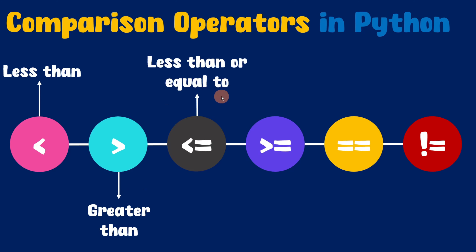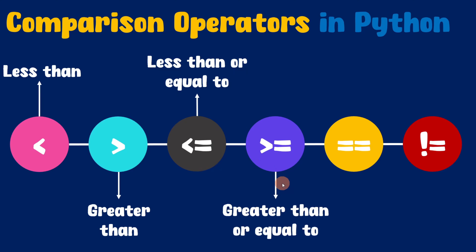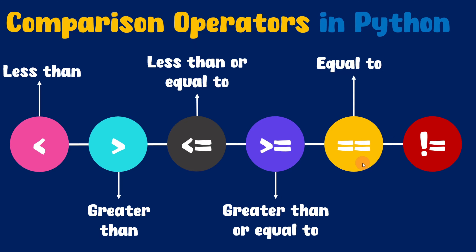Next we have the less than or equal to comparison operator. Less than or equal to comparison operator will take two values. If the value present on the left hand side is lesser than or equal to the value present on the right hand side, then it will return true, otherwise it will return false. Next we have greater than or equal to, which will also take two values. If the value present on the left hand side is greater than or equal to the value present on the right hand side, then the greater than or equal to comparison operator will give true, otherwise it will give false.